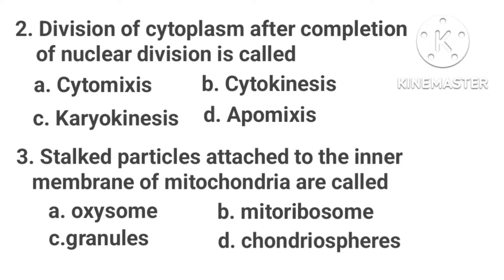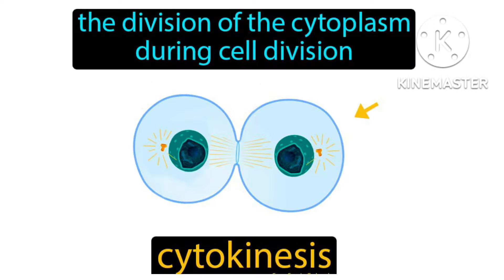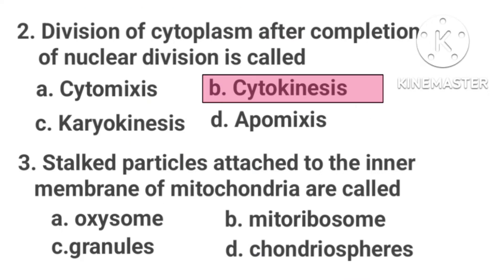Division of cytoplasm after completion of nuclear division is called: Option A, cytomyxis. Option B, cytokinesis. Option C, karyokinesis. Option D, apomyxis. The division of cytoplasm is termed as cytokinesis. Cytokinesis is the physical process of cell division which divides the cytoplasm of a parental cell into two daughter cells. So the correct answer is Option B.